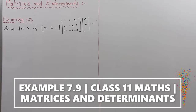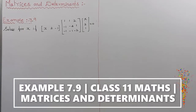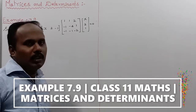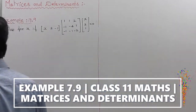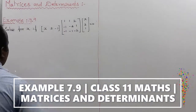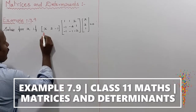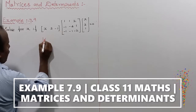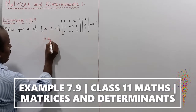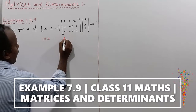Example 7.9 — solve for x. Three matrices are given. The first matrix order is 1 row by 3 columns. The second matrix order is 3 by 3.